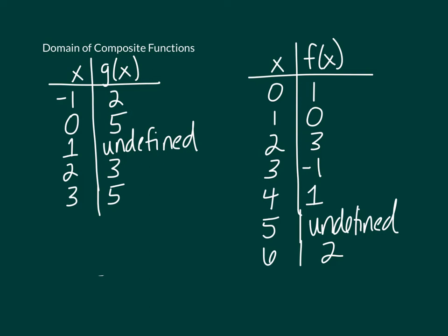In this example, we're going to look at how we find the domain of functions that come from composition. In this case, suppose that these are the two functions, g and f. I don't have an algebraic equation for them — they're just given exactly by these tables of values.